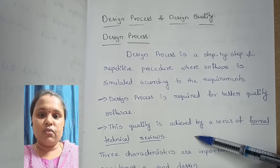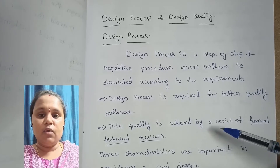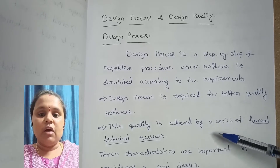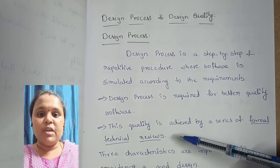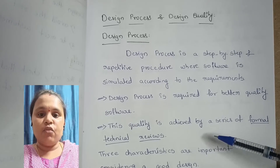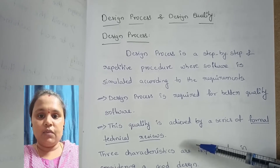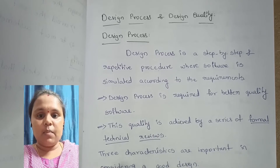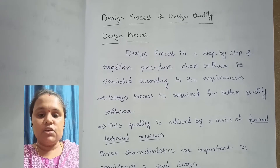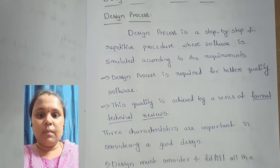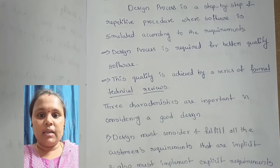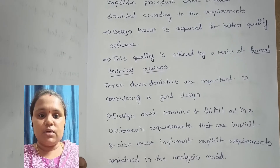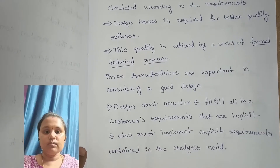Here we are going to achieve better quality software with the help of the design process, and we are going to produce quality software with the help of several formal technical reviews. According to the design process, there are three important characteristics we should discuss here.